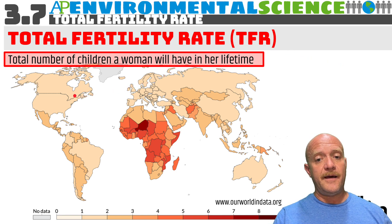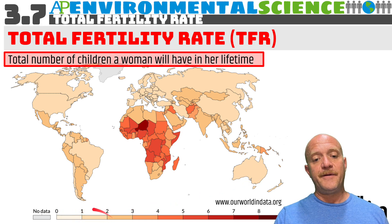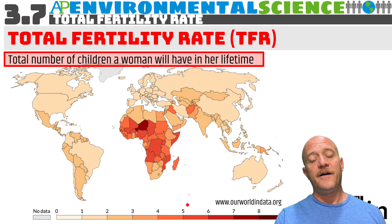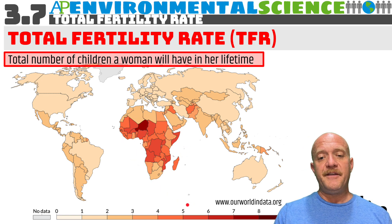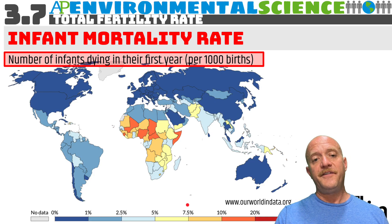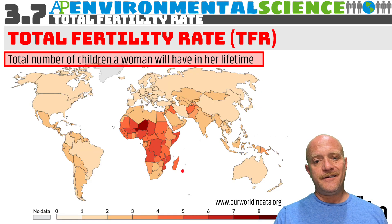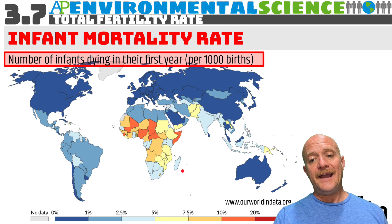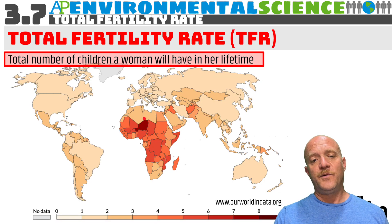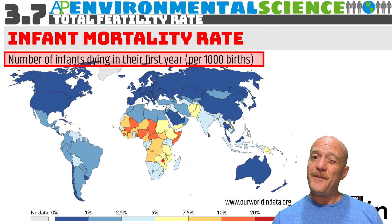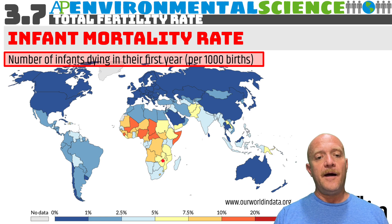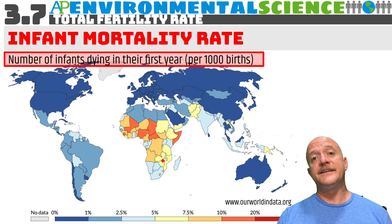If you look at many countries in North America, Europe, Eastern Asia, and Australia, the fertility rate is lower than two. But in sub-Saharan Africa it is well above two. There are many factors related to this. One of them is infant mortality rates — the number of infants dying in the first year of life per 1,000 births. The infant mortality rate is higher in sub-Saharan Africa, which is why the fertility rate is higher there. One factor is that families are having more babies to replace the babies that have died.